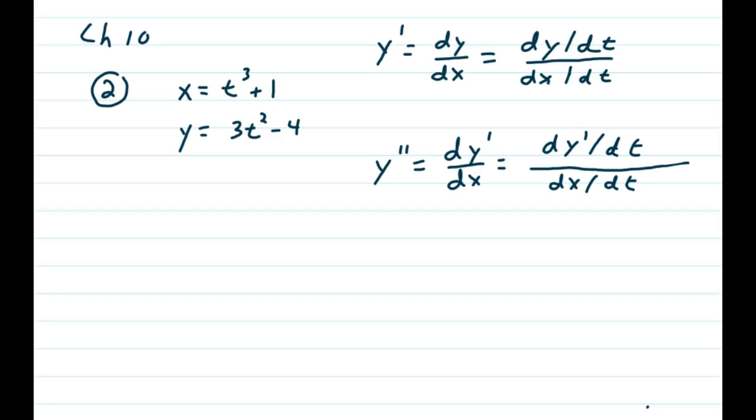In order to find the second derivative, we of course need to find the first derivative. So y prime, written as dy/dx, is a formula that looks like dy/dt over dx/dt, which makes sense because those dt's cross out, leaving dy/dx.